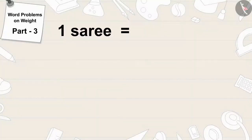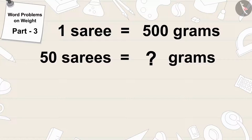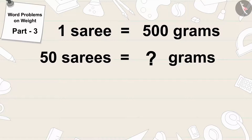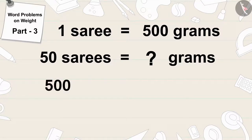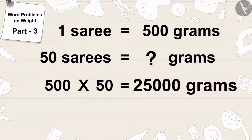A saree weighs 500 grams. To find the weight of 50 sarees, we have to multiply the weight of one saree by 50. 500 multiplied by 50 equals 25000 grams.